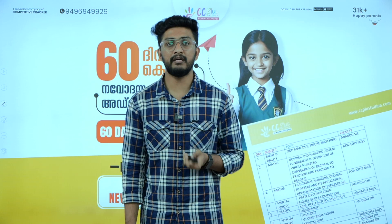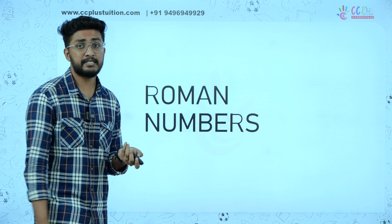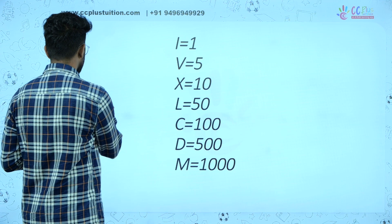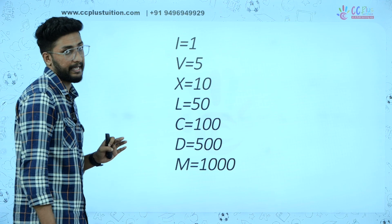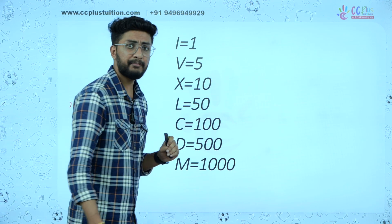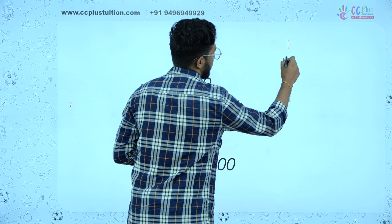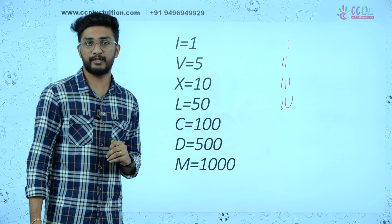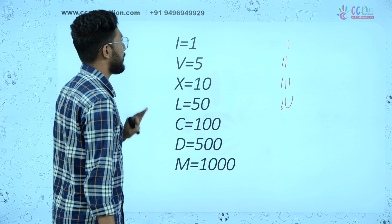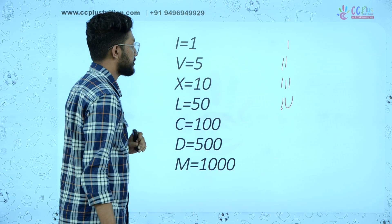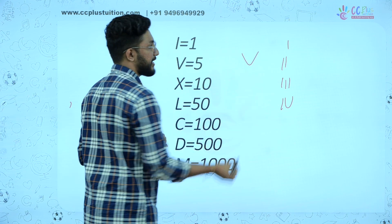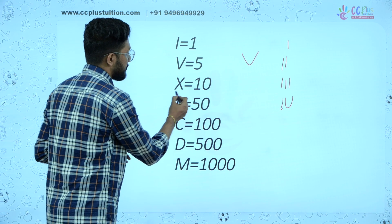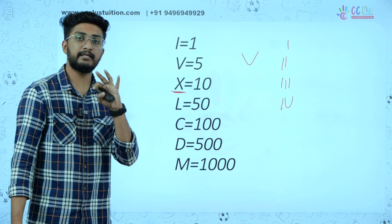Now, let's go to the topic. Roman numbers — we will discuss this. This is the main item. In Roman numbers: 1 is I, 5 is V, 10 is X.